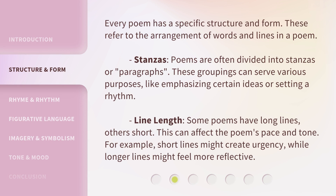Every poem has a specific structure and form. These refer to the arrangement of words and lines in a poem. Stanzas: poems are often divided into stanzas, or paragraphs. These groupings can serve various purposes, like emphasizing certain ideas or setting a rhythm. Line length: some poems have long lines, others short. This can affect the poem's pace and tone — short lines might create urgency, while longer lines might feel more reflective.